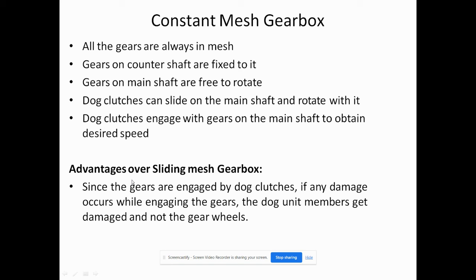One advantage over the Sliding Mesh gearbox is that since the gears are engaged by the dog clutch, if any damage occurs during engagement, only the dog unit member has to be removed and the dog clutch will be removed, while the entire gear remains in the same safe position. This is the most important advantage of the constant mesh gearbox.